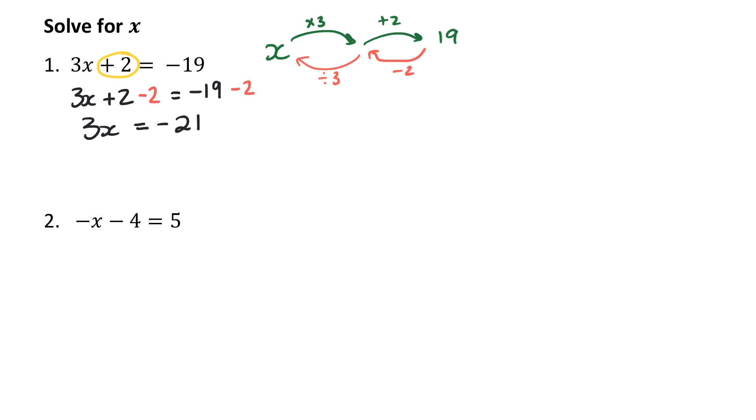Now the next part of undoing this equation would be to divide by 3, because currently x is multiplied by 3. So I'm going to divide by 3 on both sides. So I'm going to get x on the left. And negative 21 divided by 3 gives me negative 7 on the right. And therefore, x is negative 7. I followed the same process as the arrow diagram. First, I subtracted 2 from both sides. And then I divided by 3 on both sides.